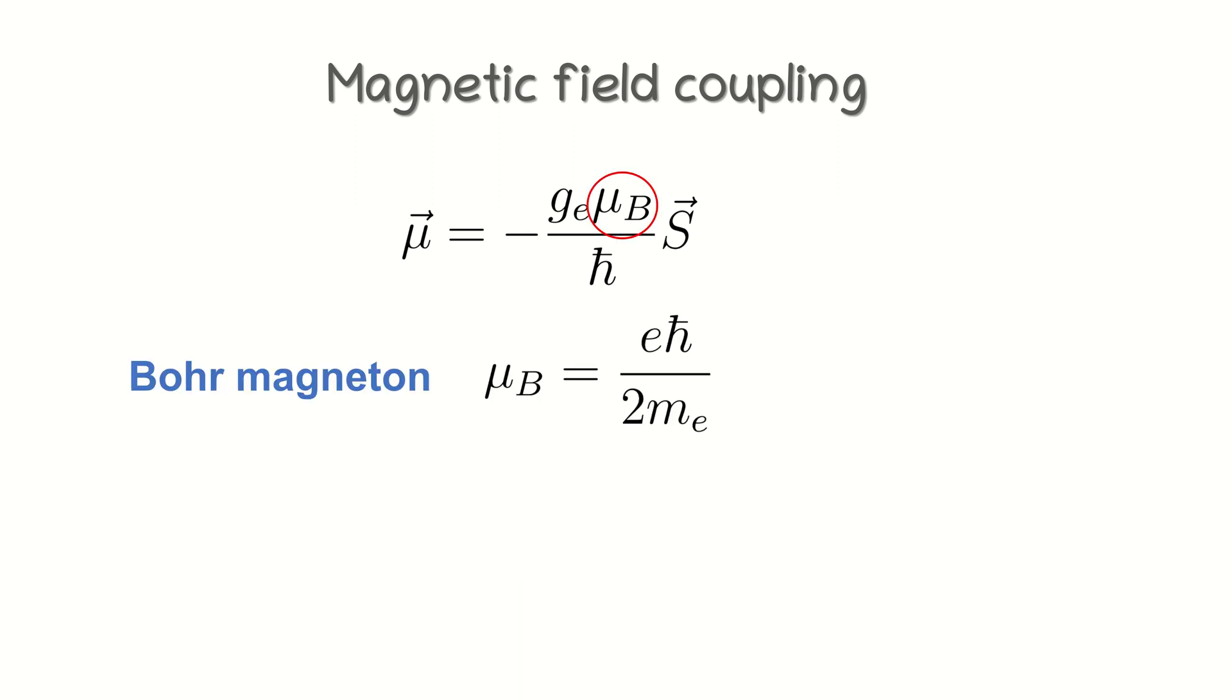Mu is Bohr magneton, a physical constant and a natural unit for expressing the magnetic moment of an electron caused by its orbital or spin angular momentum. H-bar is a reduced Planck constant, a fundamental physical constant, and s is the electron spin.